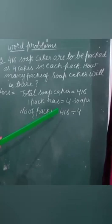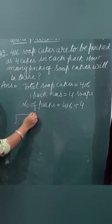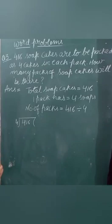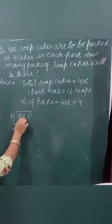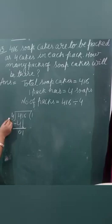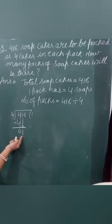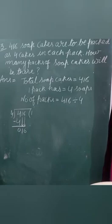Now we solve this sum. 416 divided by 4. Count the table of 4 till we get the first digit. 4 ones are 4. Subtract it. 4 minus 4, we get 0. Now 1 comes down. See, 1 is smaller than the divisor, smaller than 4, so it doesn't come in the table of 4. Then we come down with 6.